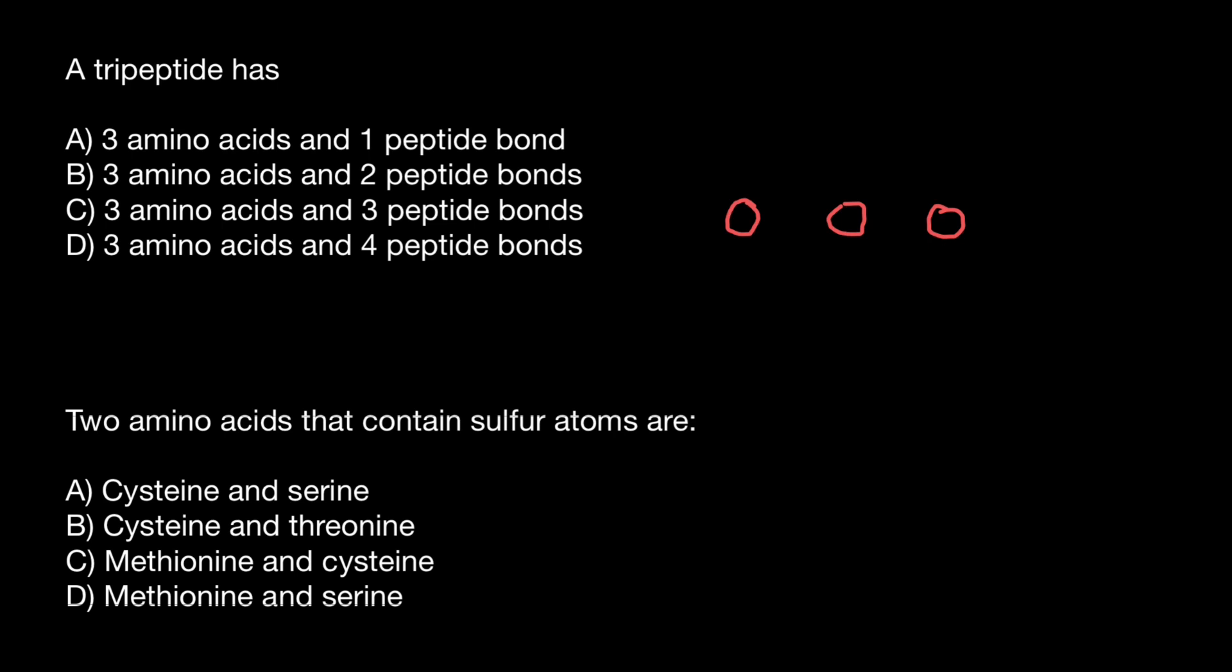And these three amino acids are going to be connected through peptide bonds. So three amino acids would be connected through two peptide bonds. And this is answer B.